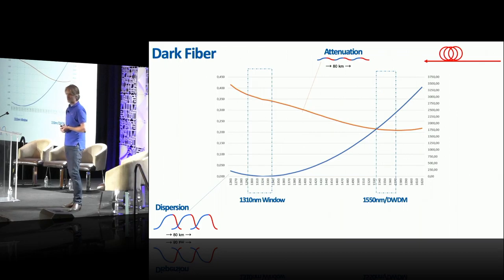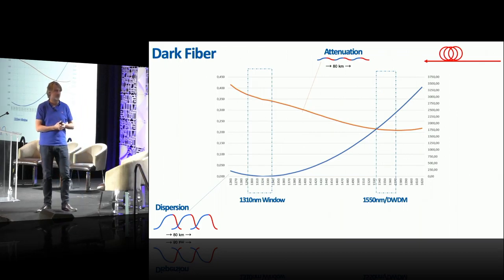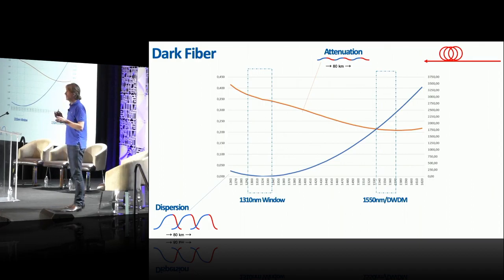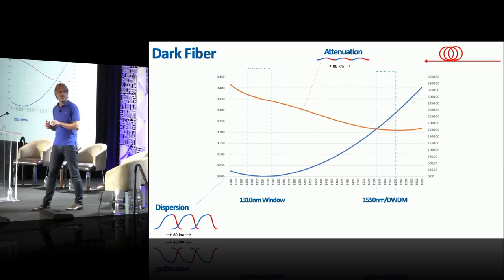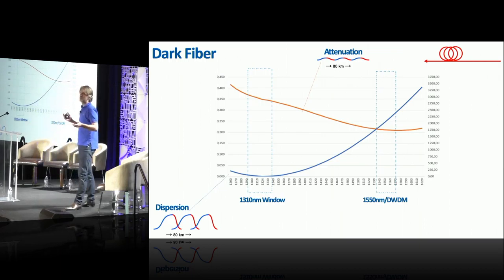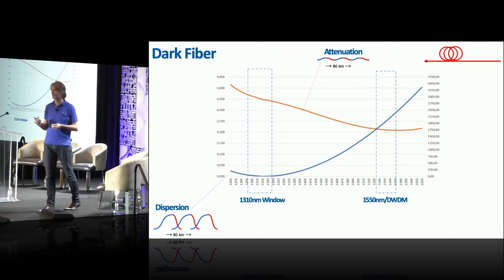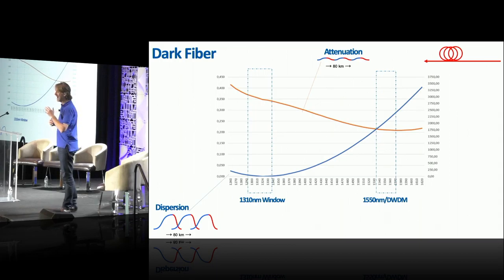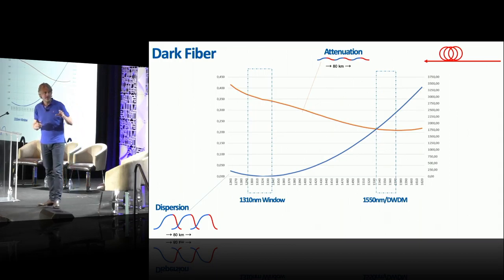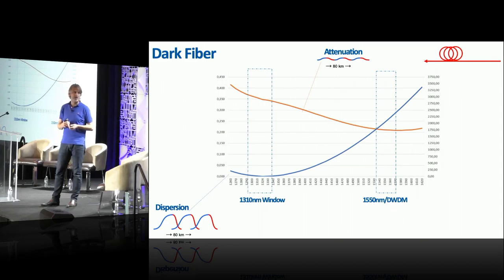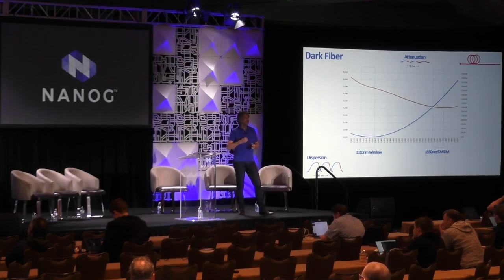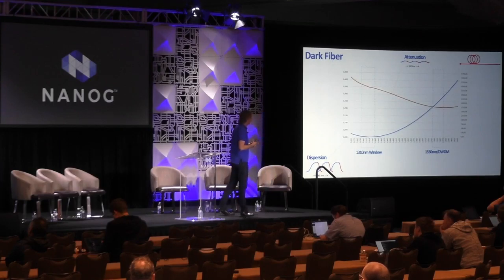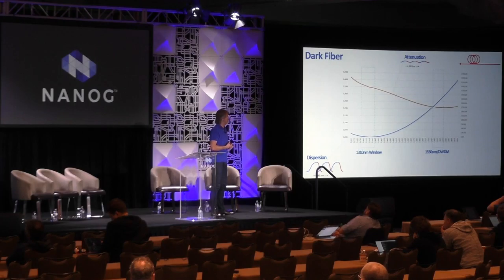Dispersion and attenuation differ a lot depending on wavelength. In the DWDM 1550nm window, you get low attenuation — about 0.21 dB loss per kilometer — but high dispersion. In the 1310nm window, where LR and gray optics emit, you have hardly any dispersion but high attenuation. So there's no perfect color: you always have either dispersion or high attenuation.